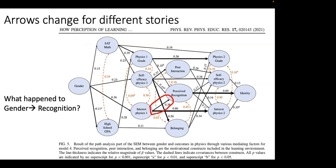By the way, when I suggested changing the arrow between interest and perceived recognition, sure enough, if you look at some of the later papers, when they want to tell a different story, the arrow from interest to recognition goes the way I suggested in the alternative DAG — without acknowledging the relationship to the earlier paper.